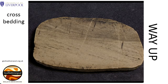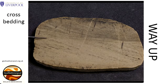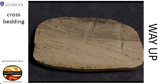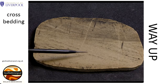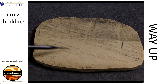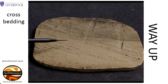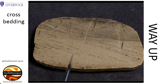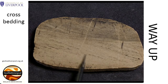The colour change in this rock shows the boundary between two sets of cross bedding. Currents move the sand up one side of the dune. When it reaches the top, the sand avalanches down the other side and is deposited in a series of layers that slope down current. These sloping layers of sand build up to form cross bedding.